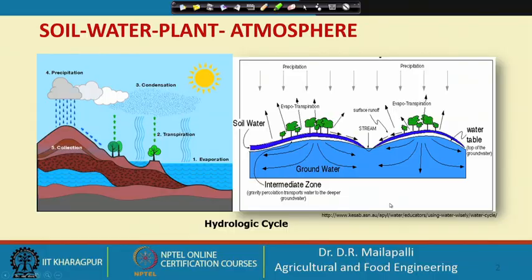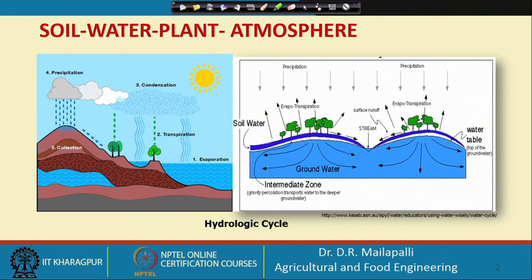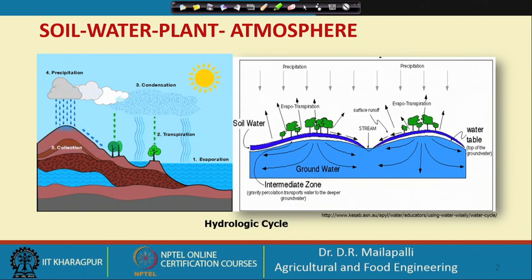The soil properties — I divide into 2 lectures because this is the core of learning irrigation principles and also drainage principles. That is why we need to understand the basic soil properties. Here, water is the main connection between soil, plant, and atmosphere. This is really a continuum. If you see here the hydrological cycle.